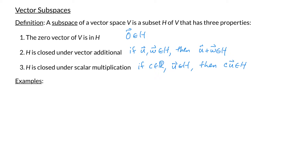The reason why we don't have to check all of the properties like commutativity, associativity, or the distributive property is because we're using the same operations as we did in V. And since we're given that V is a vector space, we know that those properties are already satisfied.